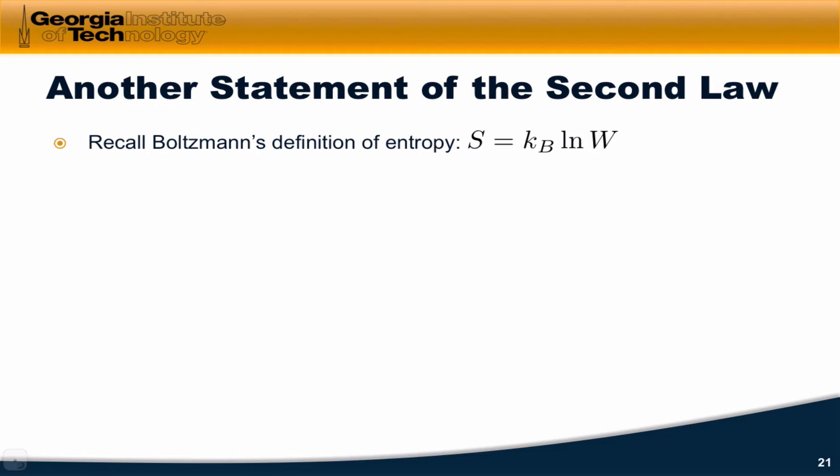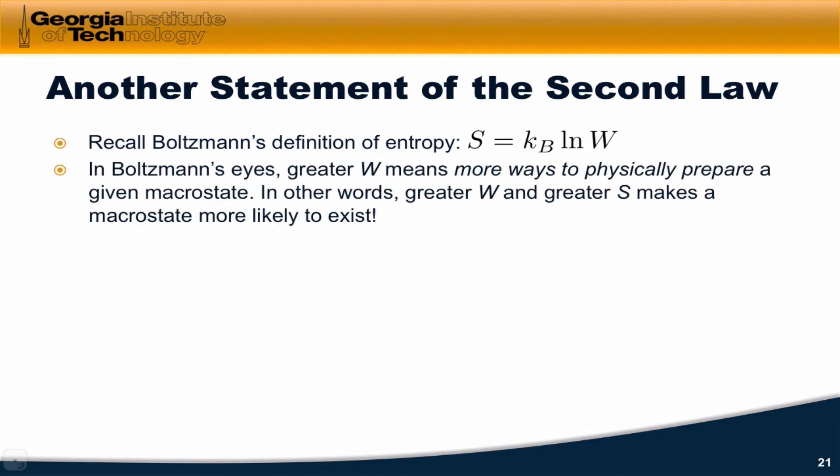The idea that S is proportional to the natural log of W, the number of distinct microstates associated with a given macrostate. In Boltzmann's eyes, a greater W means more ways to physically prepare a particular microstate. That means that macrostate is simply more likely to exist.